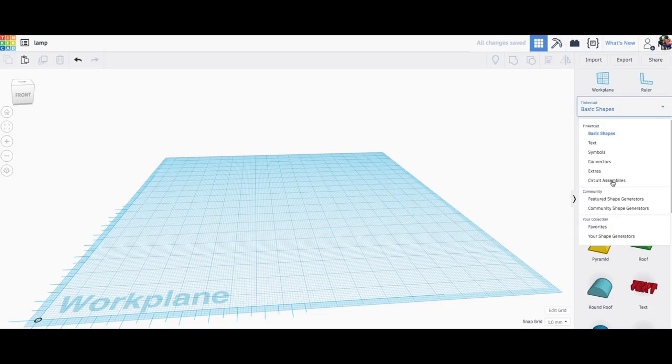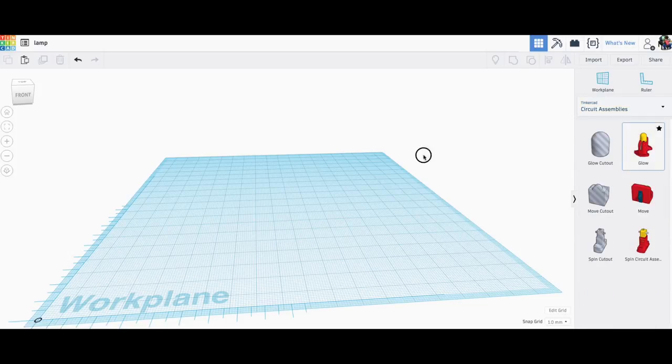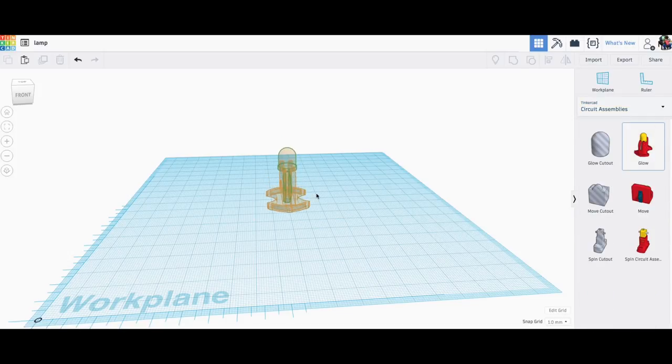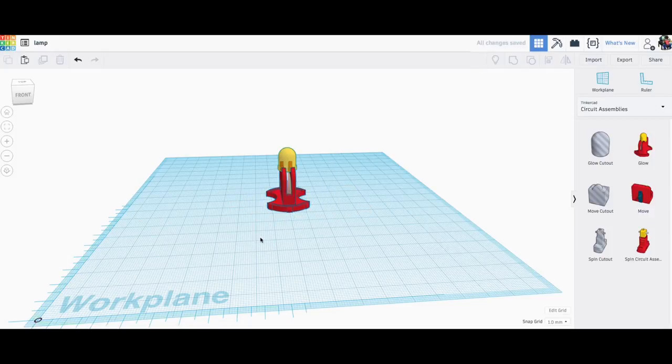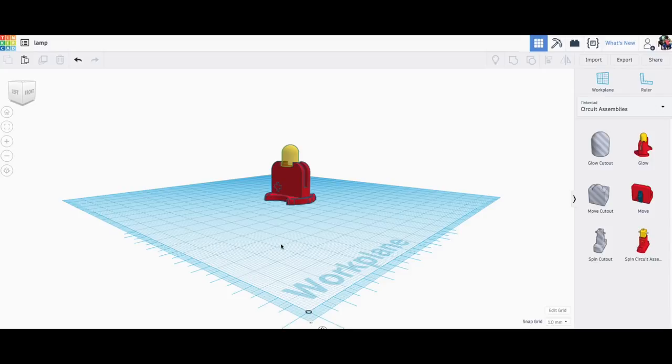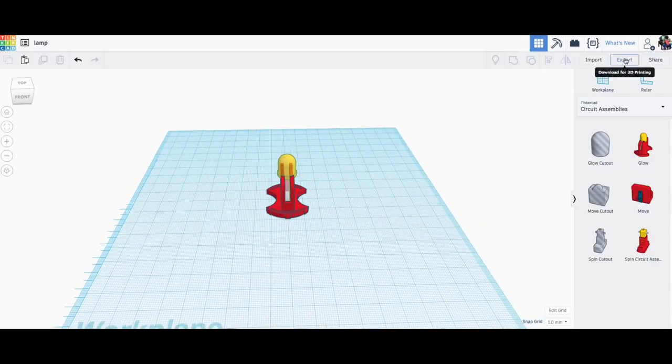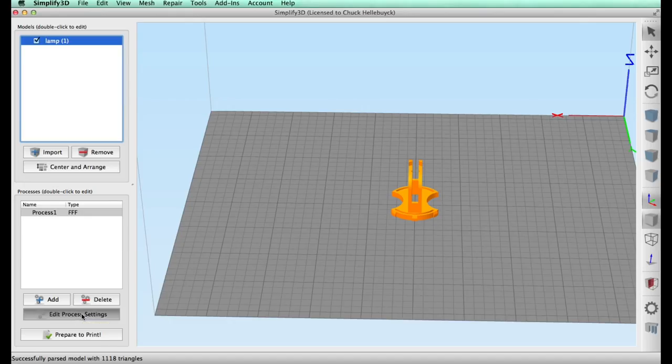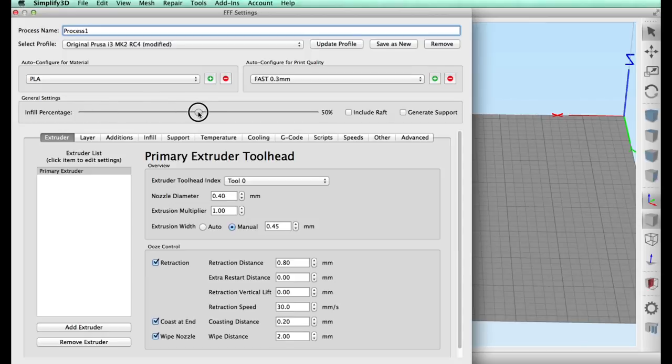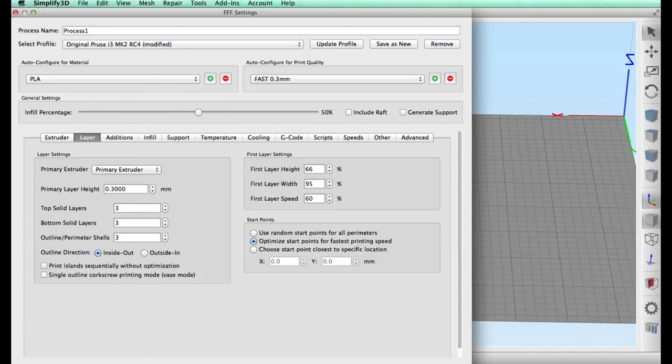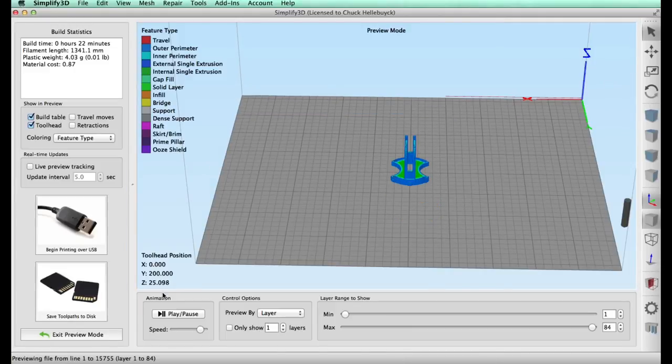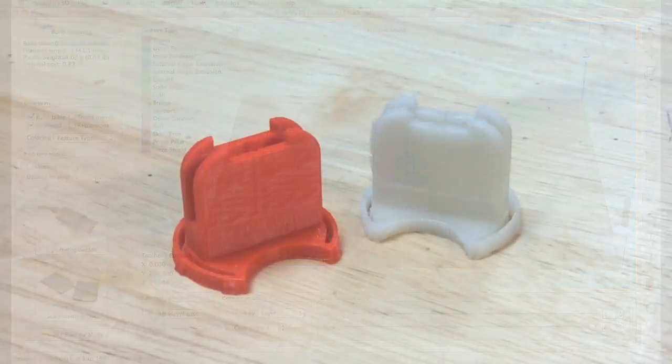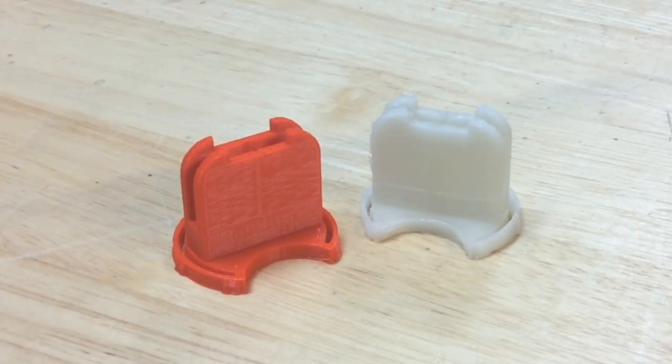So the next step was to print that little base that holds the LED and battery that they call a glow within Tinkercad. So I went to the circuit assemblies, grabbed the glow, brought it into Tinkercad, and even though it shows an LED and battery in here, when you download it, it doesn't include that. So I just clicked on the STL file, downloads it, and then brought it into Simplify3D and here it is—just the base. There's no LED or nothing. I set it to fifty percent fill and a 0.3 layer height, printed on my Prusa MK2S, and it said it will only take 22 minutes. Here's two of them: one I printed in red filament and one I printed in glow in the dark. That's the one I'll actually use in the pumpkin. The red one's for demonstration purposes.